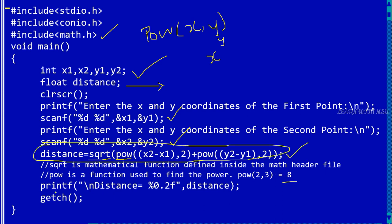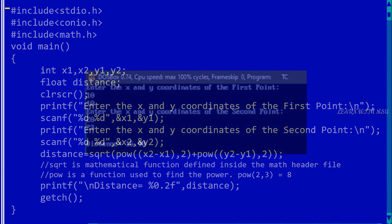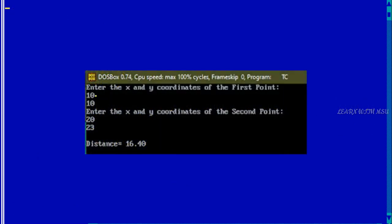And then we are displaying, already we know that what is %.2f, which means that after the decimal points we are using only two values. So that is how we are going to identify that the distance value is a float. Here I am giving it as 10 and 10 and 20 and 23. So here I am getting the result as 16.40. So this is the program and this is the explanation.